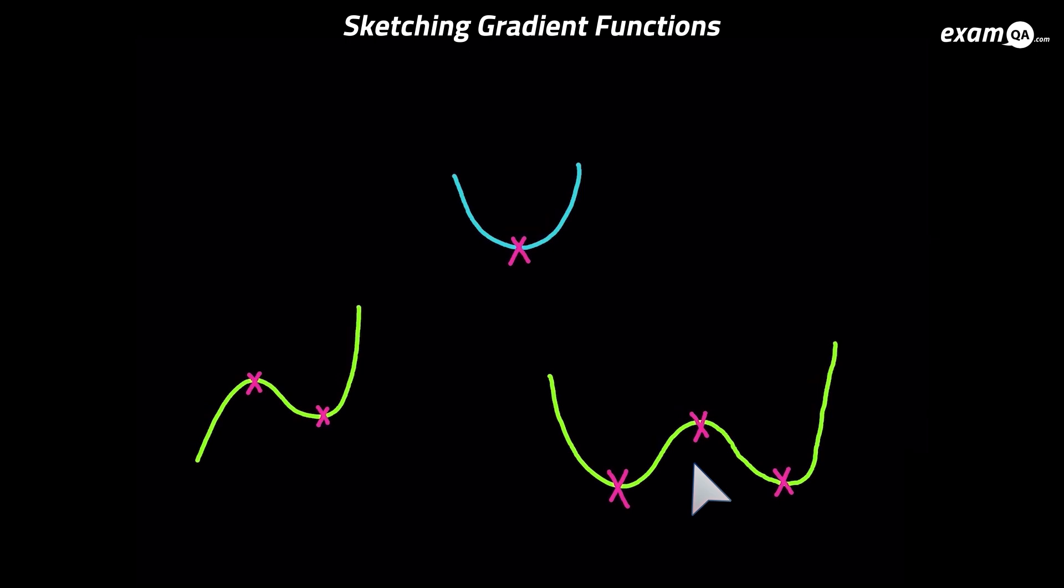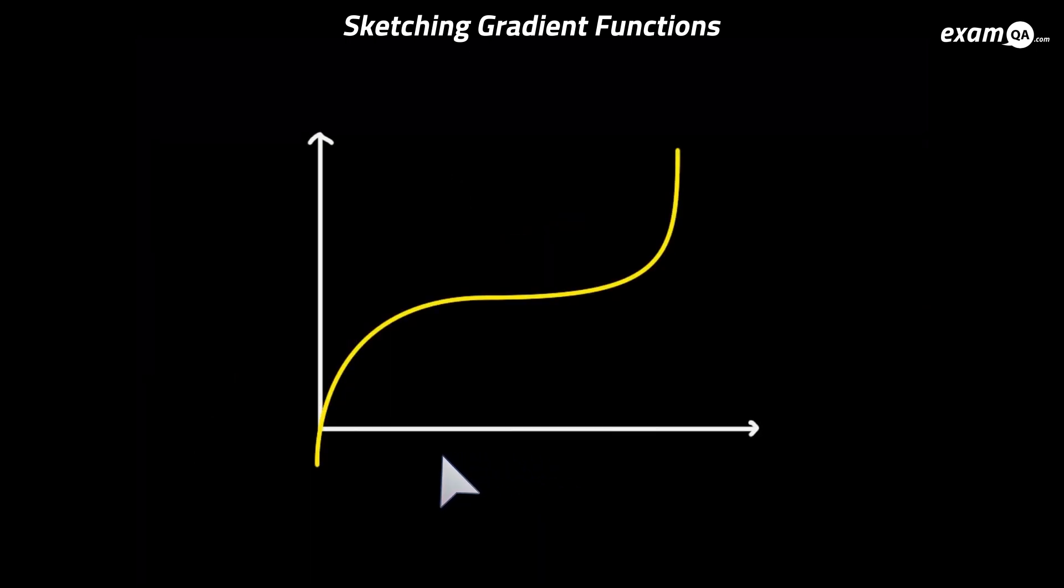So let's try drawing the gradient function. So here we've got a cubic curve. And we know this point is a point of inflection. So it's got a gradient of 0. So the gradient function will have a value of 0 at this point. So it'll be somewhere here, where the y value is 0. And I've marked it with a cross.